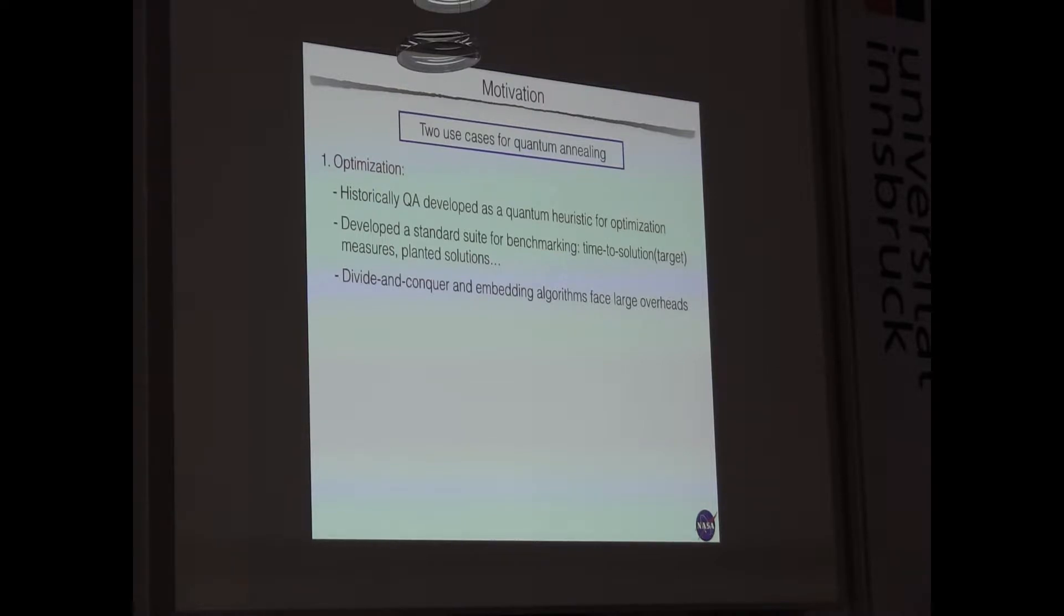Optimization, of course. This is what quantum annealing was historically developed to do. It's a quantum heuristic for optimization. And here, I would say, most of the research and most of the work is done in optimization. We know there are well-developed techniques for benchmarking and understanding the performance of different solvers, and there are also many subtleties, like Cathy was explaining. But still, we can use established techniques like time-to-solution, planting solutions. And here, if you think about practical problems, we have to use divide-and-conquer techniques which face large overheads.